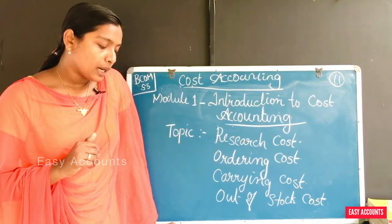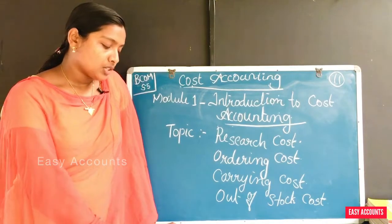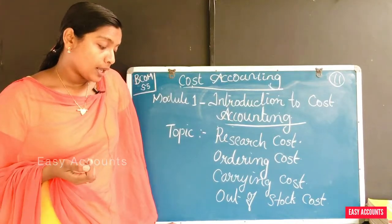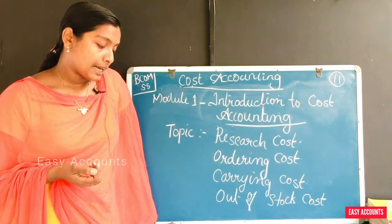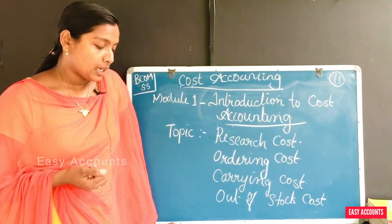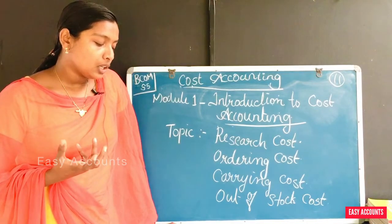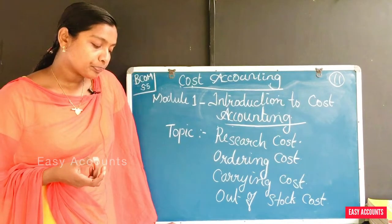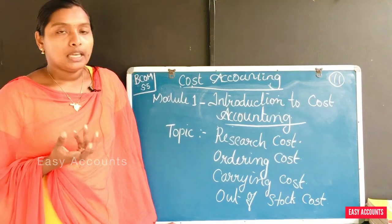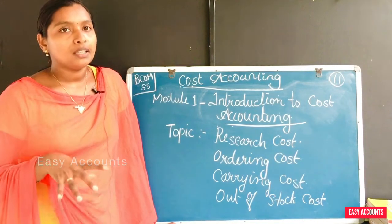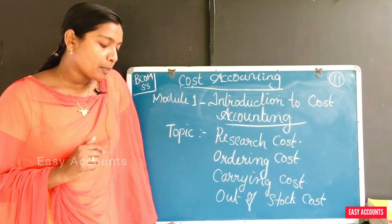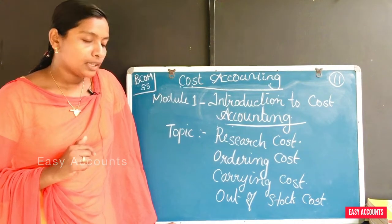Components of carrying cost include: interest on money locked up in the inventory, inventory obsolescence, storage space, rent and cost of stores operation, etc. In other words, interest and money are locked up in the inventory.